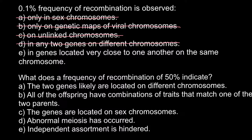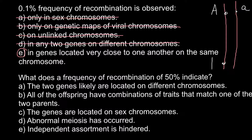Answer E: in genes located very close to one another on the same chromosome. This is the correct answer. Imagine we have two homologous chromosomes — on one chromosome we have an allele that is dominant and on the other it is recessive, and here we have another gene, capital B on one chromosome and small b (recessive) on the other. This gives us one allelic pair and another allelic pair. We call these alleles when one gene has different variants — one can be dominant, another recessive, but not necessarily.